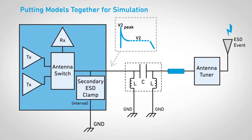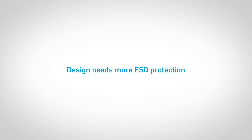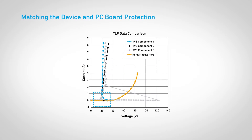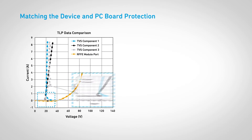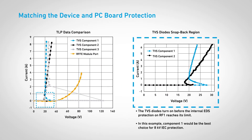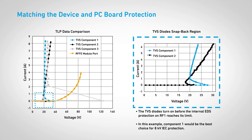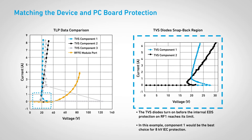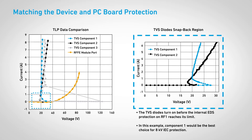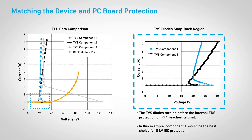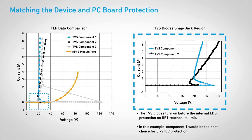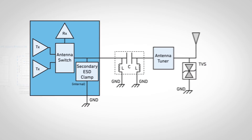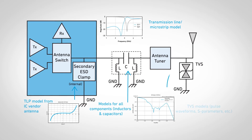If the stress level exceeds the amount the IC can mitigate, external ESD protection is required. Let's assume your current design needs protection and requires a TVS diode to properly protect your IC device. As an example, let's gather and compare the TVS diode transmission line pulse, or TLP, model data. In this example, the orange line represents the IC in this circuit. The analysis shows component 1 is your best component choice, as it triggers at a lower voltage in the snapback region, making it less likely to threaten the system design by clipping the signal performance. Now, input component 1 TVS model data into your simulation.